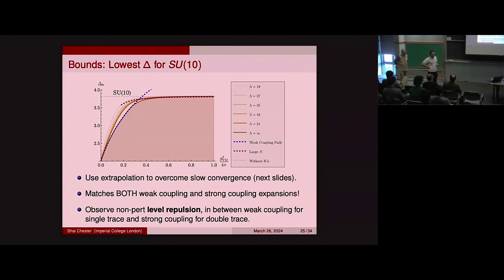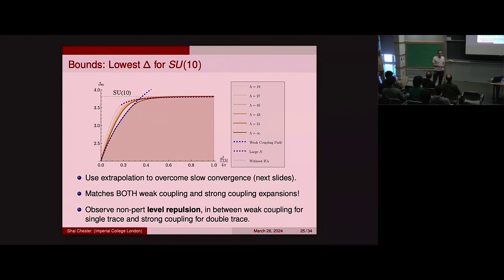Q: Have people thought about using the Fuzzy Sphere method for N=4 super Yang-Mills or ABJM? A: My understanding is that Fuzzy Sphere can't be directly applied to gauge theories — when they use it for gauge theories, they always need some other description that doesn't involve gauge fields. For ABJM, I don't think such a description exists. I actually view that as a good thing — perhaps Fuzzy Sphere will replace the bootstrap for simple theories like O(N) vector models, while the bootstrap will only survive as an application to holography, which would make the founder of bootstrap very happy.